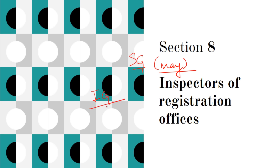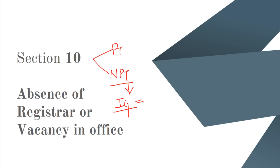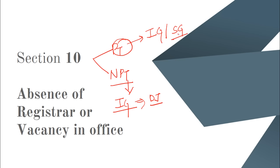Section 10 talks about absence of registrar and vacancy in office. There are two conditions. First, if a registrar's office is vacant in a district that does not fall in a presidency town, and the registrar is absent or the office is temporarily vacant, the district judge makes the appointment. Second, when a district falls within the presidency town area and the office is vacant or temporarily vacant, first the Inspector General appoints, and if he defaults, the state government appoints.